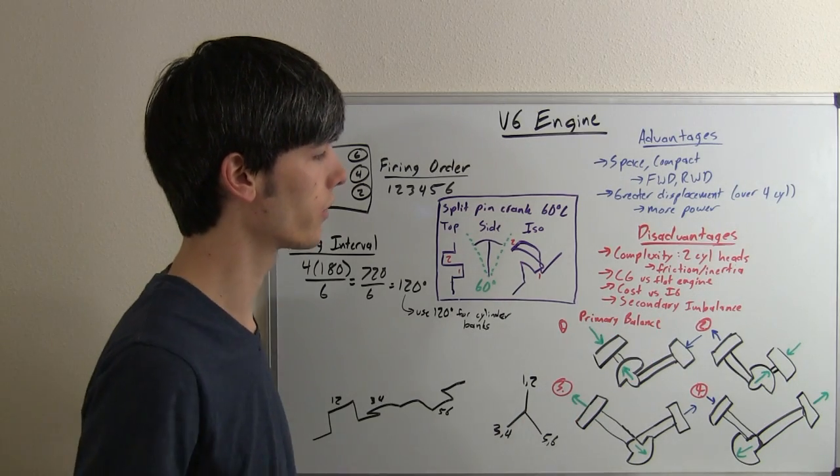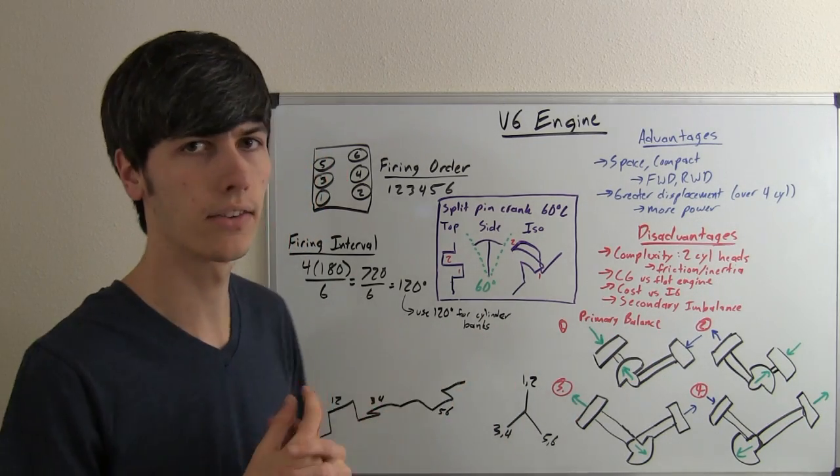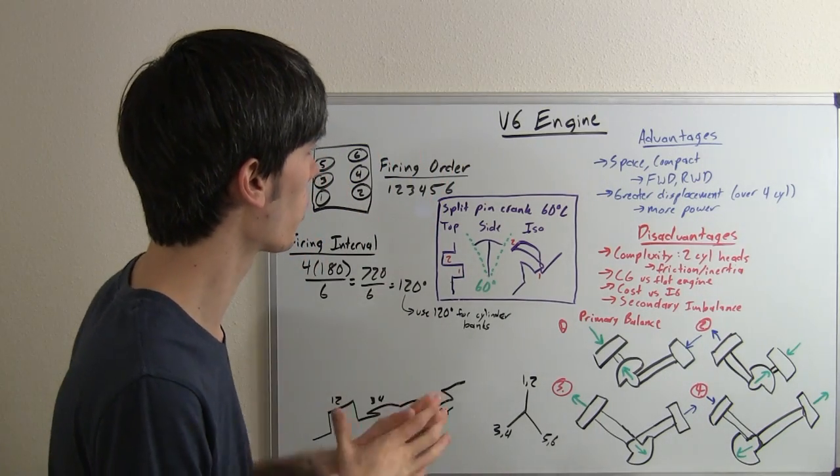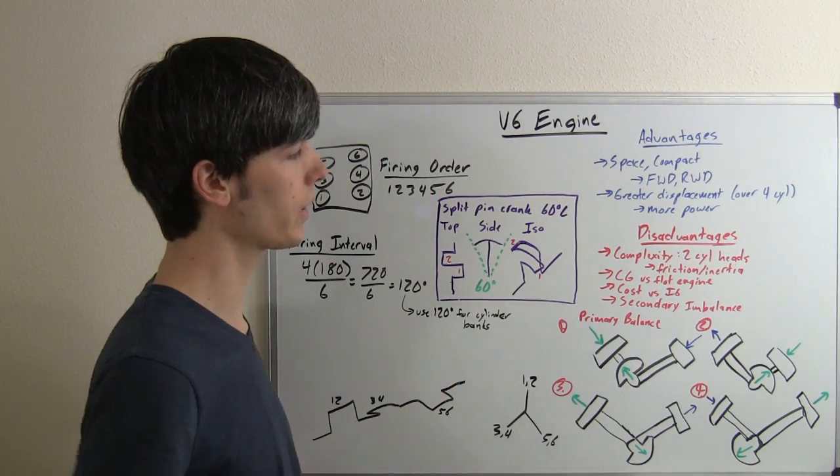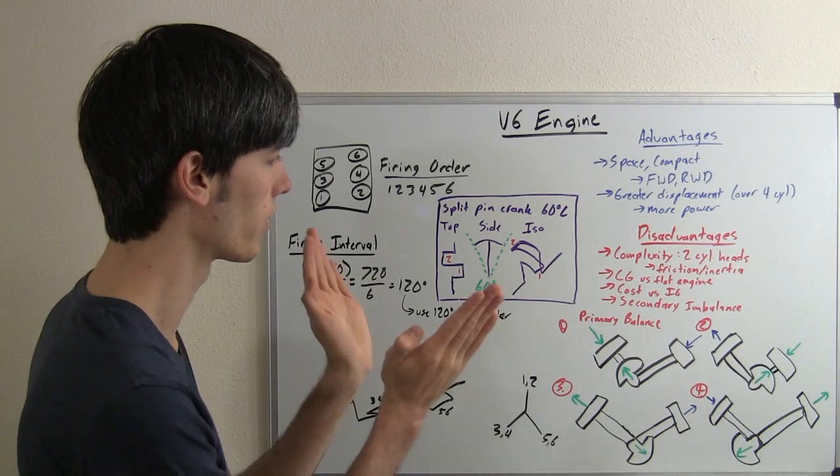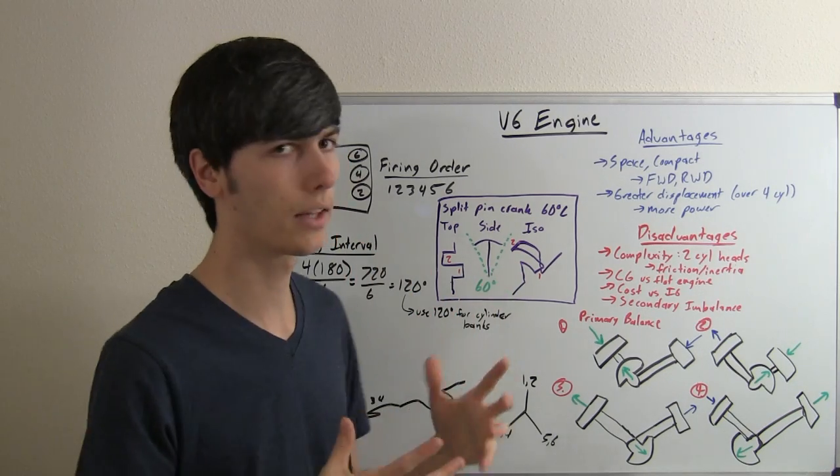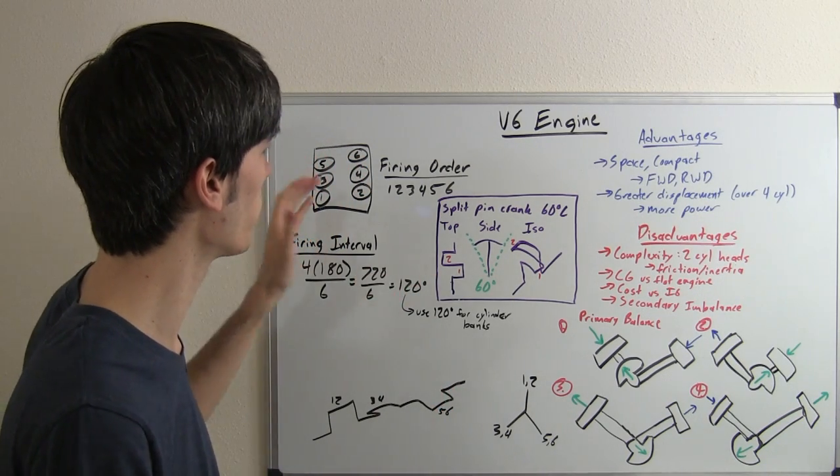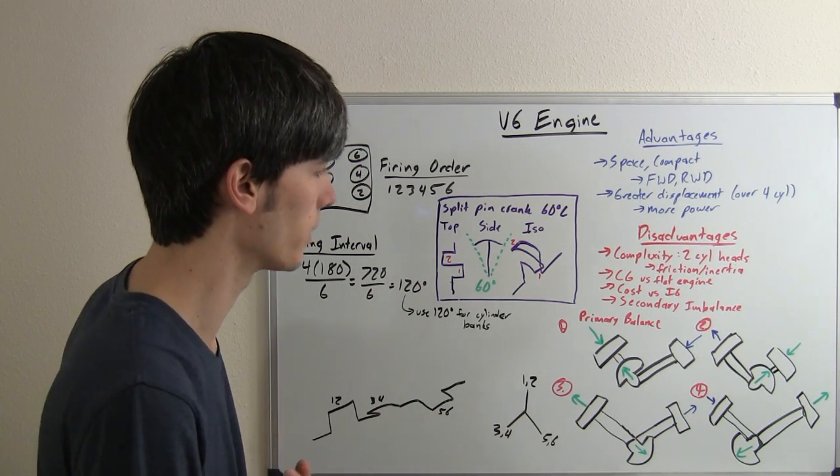Then also, you're going to have a secondary imbalance. Unlike in an inline six engine where the forces naturally compensate each other out, this is more like two I3 engines, inline three cylinder engines, mated together. And inline three cylinder engines do not have their secondary forces balanced out, so you have a secondary imbalance on a V6 engine.